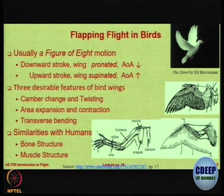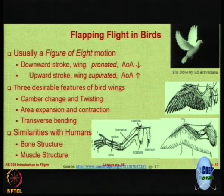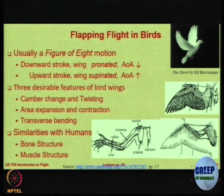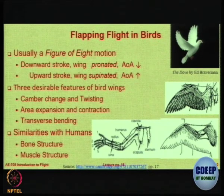There are similarities in humans in the bone structure and the muscle structure — we have very similar muscles to the birds. But why is it unlikely that a human being can fly by attaching wing-like things and flapping? What is the reason?